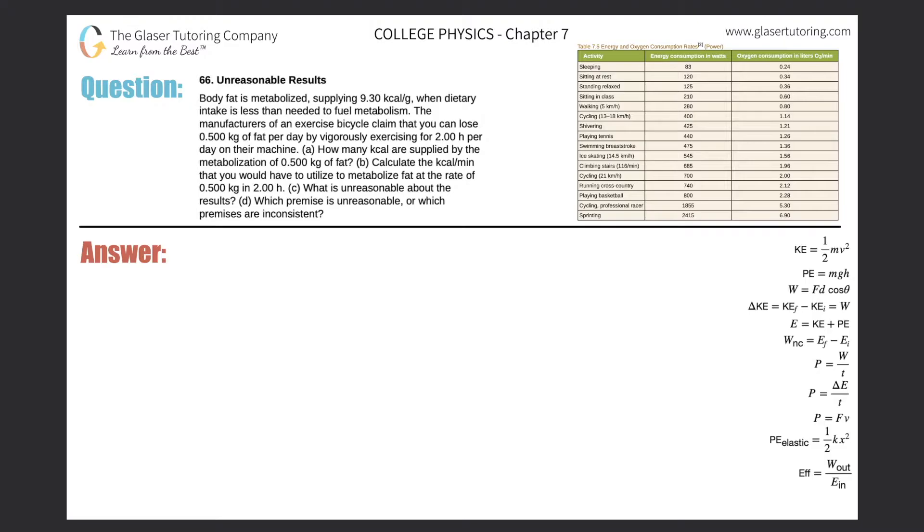Number 66, unreasonable results. Body fat is metabolized applying 9.3 kilocalories per gram when dietary intake is less than needed to fuel metabolism. The manufacturers of an exercise bicycle claim that you can lose 0.5 kilograms of fat per day by vigorously exercising for two hours per day on their machine. So how many kilocalories are supplied by the metabolism of 0.5 kilograms of fat?